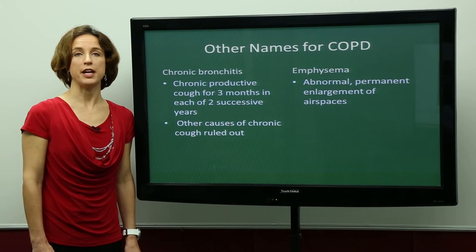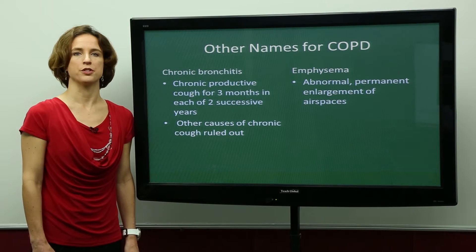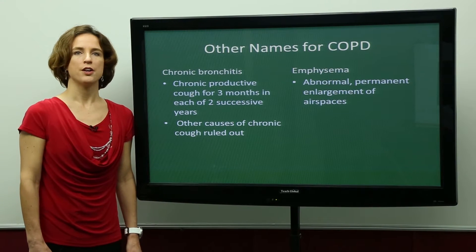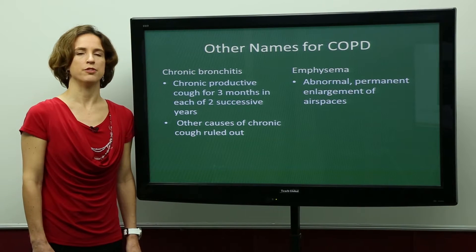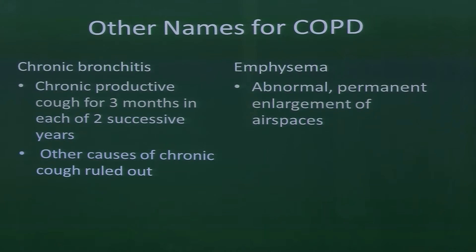COPD has some other names that you may hear when learning about and taking care of patients with this disorder. These include chronic bronchitis and emphysema. Chronic bronchitis is defined as a chronic productive cough for at least three months in each of two successive years, with other causes of chronic cough having been ruled out.